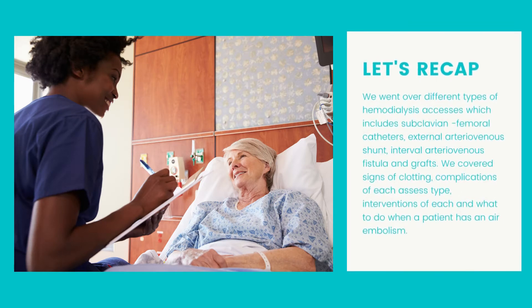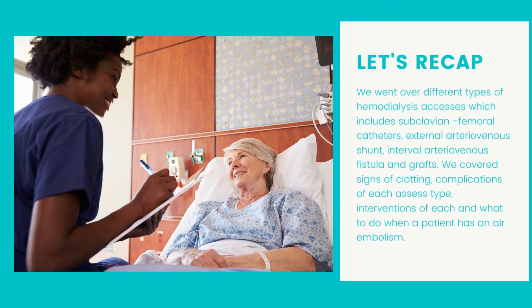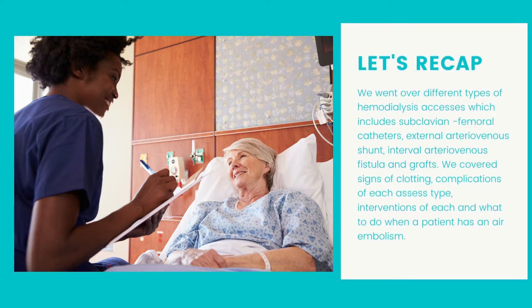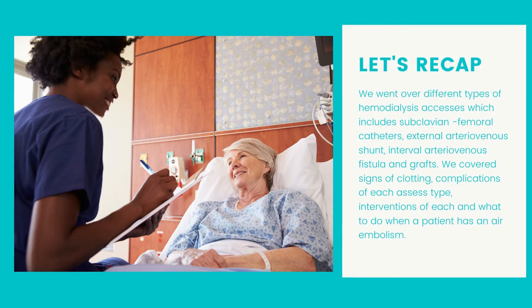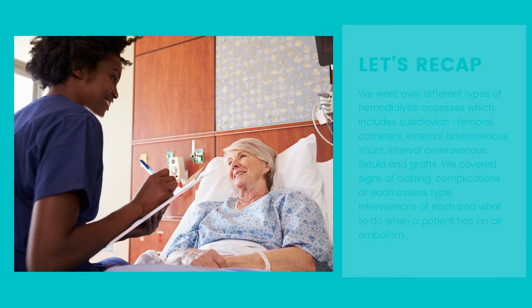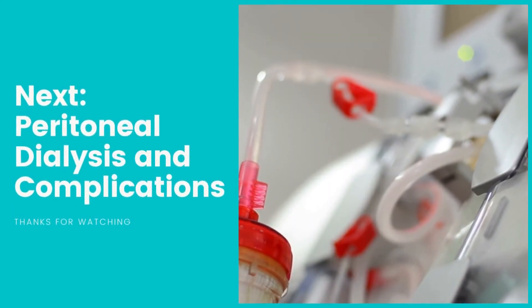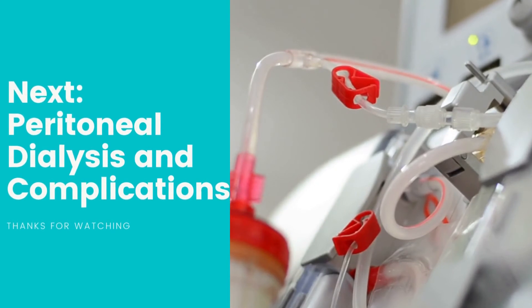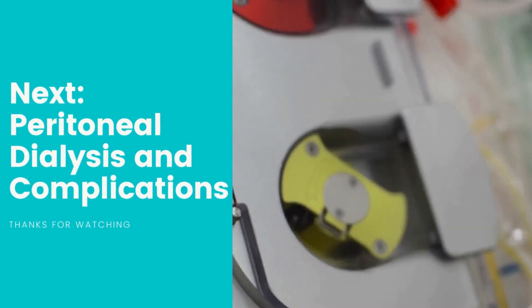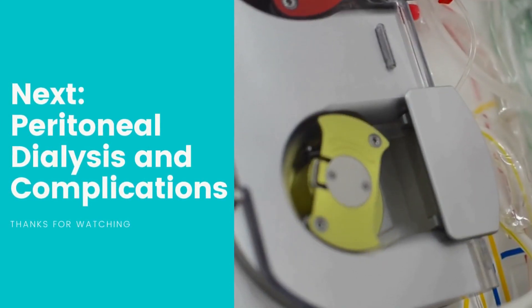In this video, we went over different types of hemodialysis accesses, which include subclavian and femoral catheters, external arteriovenous shunt, internal arteriovenous fistula, and grafts. We covered signs of clotting, complications of each access type, interventions of each, and what to do when a patient has an air embolism. Join us in the next video as we cover peritoneal dialysis and complications. Thanks for watching.